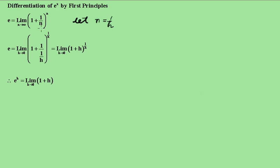Now we're going to replace the n's with 1 over h. This is 1 over 1 over h which obviously is just h, so this limit becomes limit as h goes towards 0 of 1 plus h to the 1 over h.